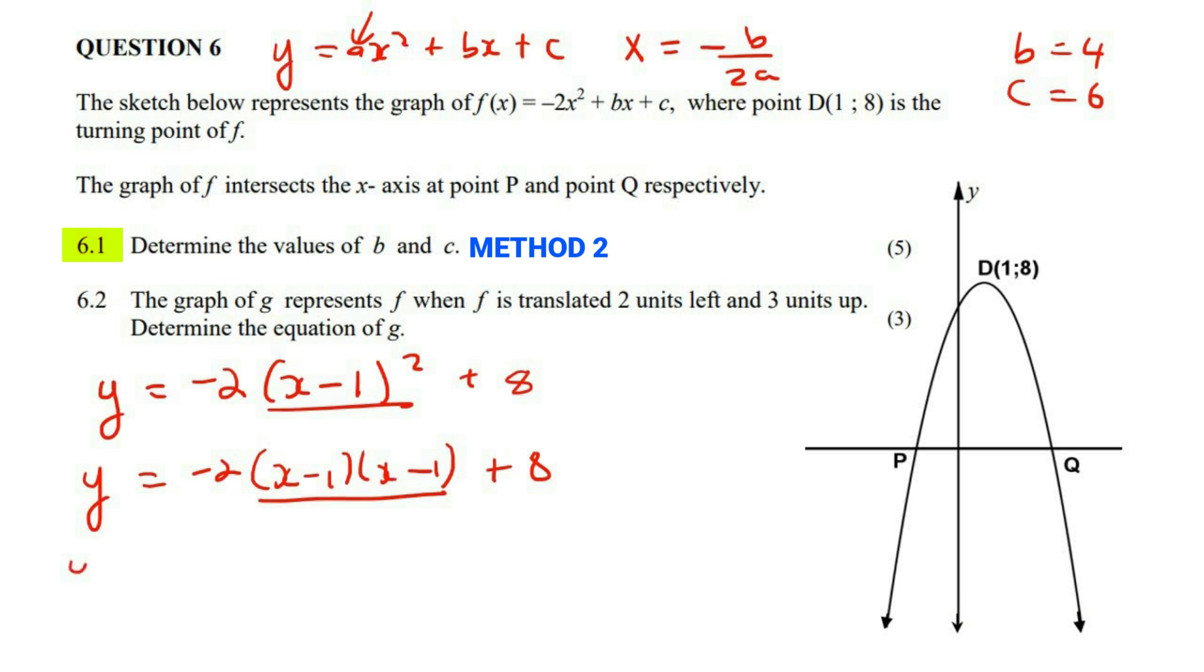Now multiply these two together. So that would become x squared, take away x, take away x, which is going to be take away 2x, and then plus one.